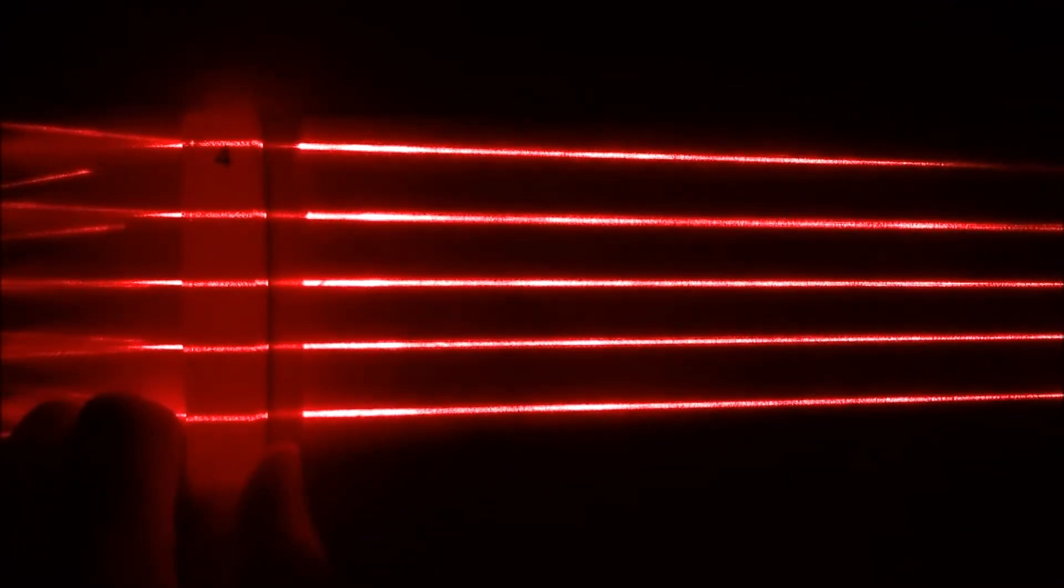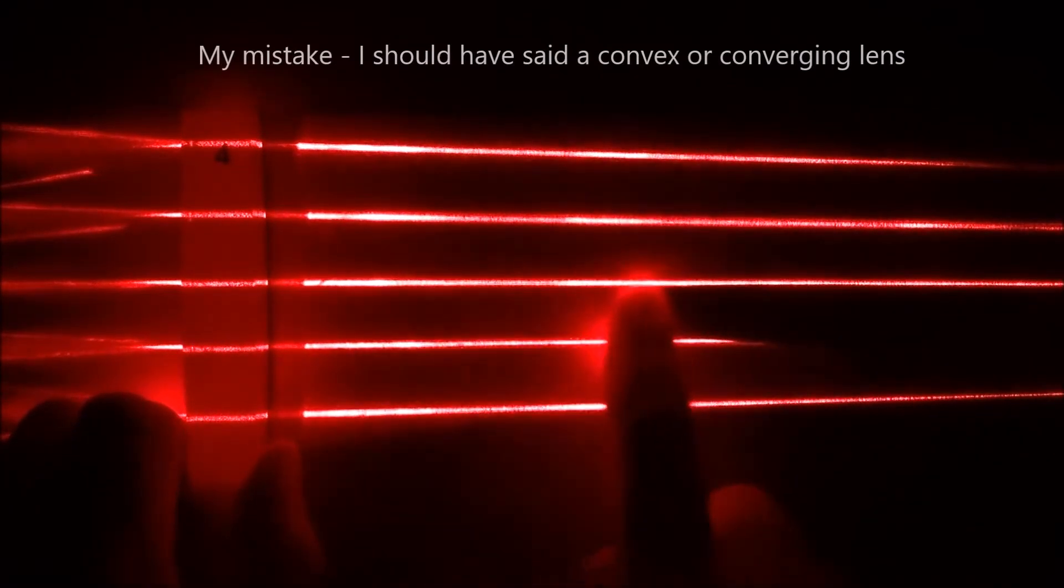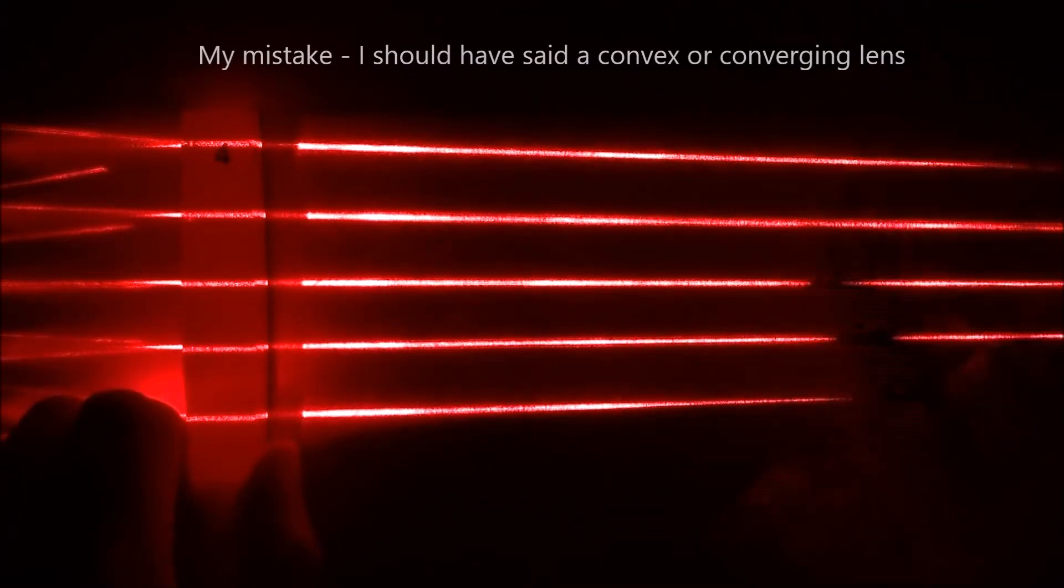Here we have some rays of light, and if we put a concave lens in, we can see that although the middle one goes in a straight line, the ones at the edge start to bend in, but not to a significant amount.